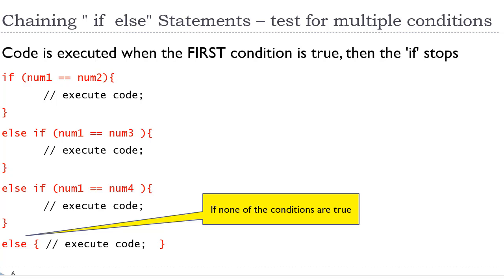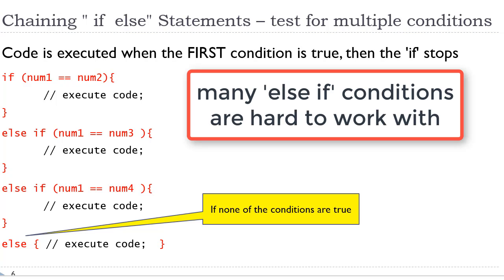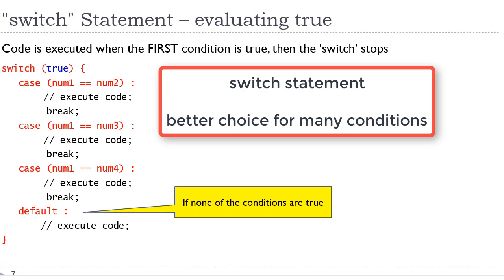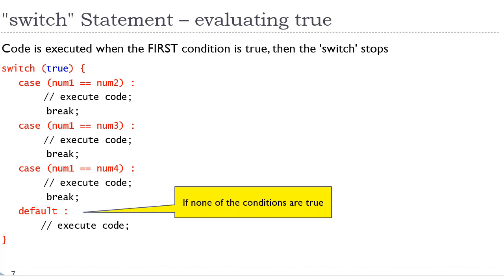Using an if-else-if chain can be very hard to work with and hard to debug, and is not recommended in a professional setting. An easier alternative is to use the switch statement. The switch statement does exactly the same thing as a chained if-else — it allows us to evaluate multiple conditions and based on a condition being true, execute code. There is less code to write and it is easier to read.